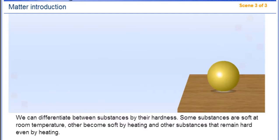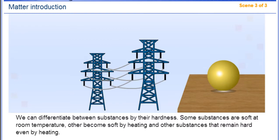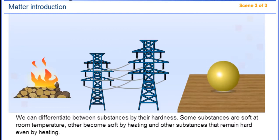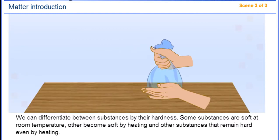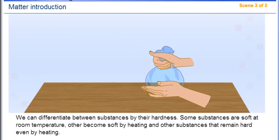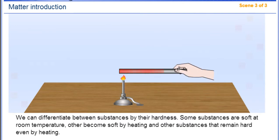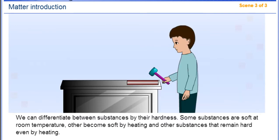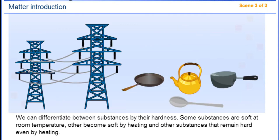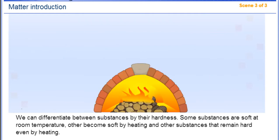We can differentiate between substances by their hardness. Some substances are soft at room temperature. Other substances become soft by heating, and other substances remain hard even by heating.